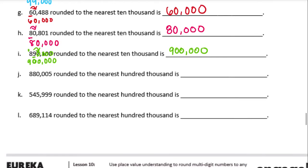J: 880,005 rounded to the nearest hundred thousand. The very first eight is in the hundred thousands place. Next to it is another eight — that eight is five or higher — so the first eight rounds up to a nine and everything else becomes zeros. That gives us 900,000.